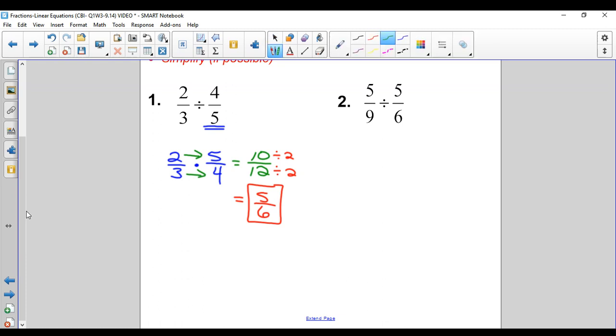Flip the second fraction, just the second fraction, and only the second fraction. We have five ninths times six fifths. Across the top, across the bottom, we get 30 over 45, and that can simplify.